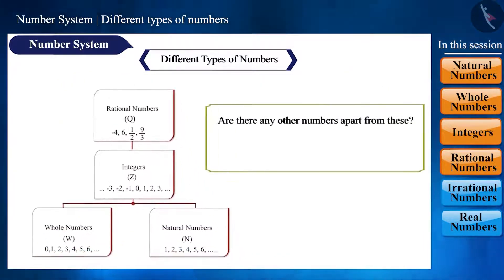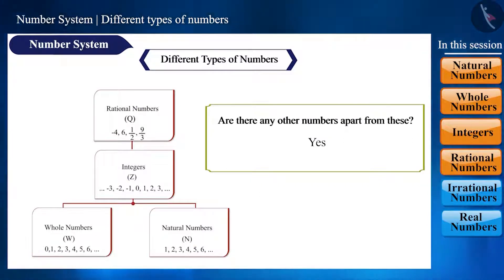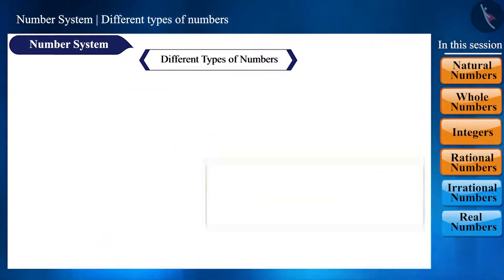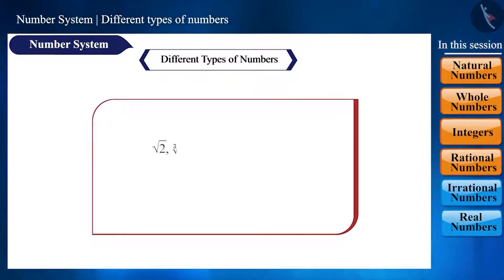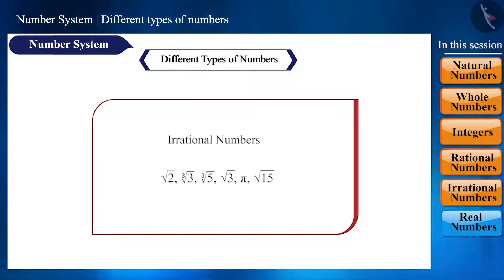Are there any other numbers left? Are there any numbers that we cannot represent as rational numbers? Yes. There are countless numbers which we cannot write as rational numbers, such as root 2, cube root of 3, cube root of 5, root 3, pi, root 15, etc. And we call such numbers irrational numbers. We represent them with the symbol Q dash.